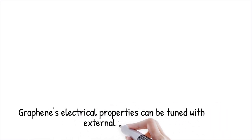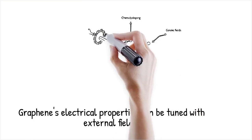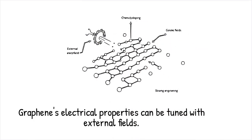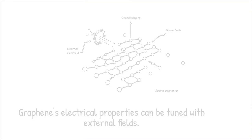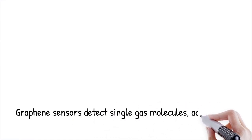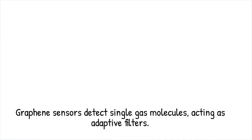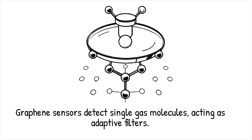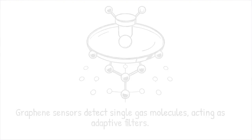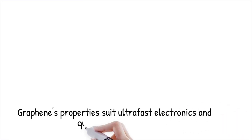Graphene's electronic properties can be modulated by applying external electric fields, chemical doping, or strain engineering. Unlike metals, where carrier concentration is fixed, graphene's Fermi level can be tuned dynamically, altering its conductivity in real time. This tunability is a key advantage for designing next-generation nano-electronic devices and flexible circuits. Graphene-based sensors, for instance, can detect single gas molecules by shifting their electrical resistance in response to external stimuli. Graphene is like an adaptive filter that changes its transparency depending on environmental conditions, while regular conductors behave more rigidly.